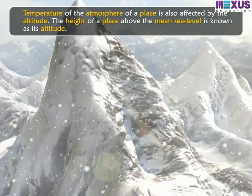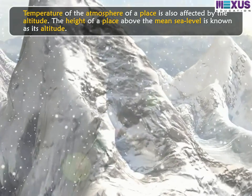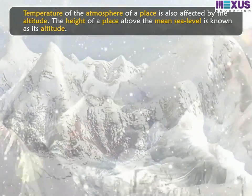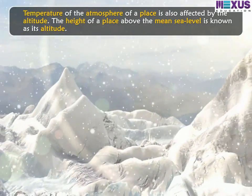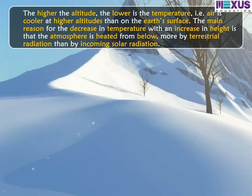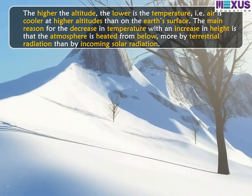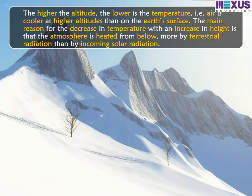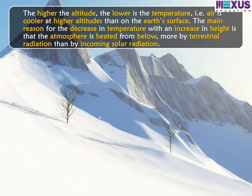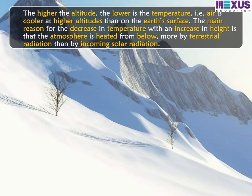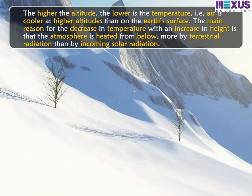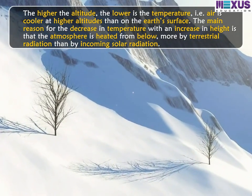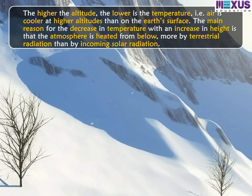The temperature of the atmosphere of a place is also affected by altitude. The height of a place above mean sea level is known as its altitude. The higher the altitude, the lower is the temperature — air is cooler at higher altitudes than on the Earth's surface. The main reason for the decrease in temperature with an increase in height is that the atmosphere is heated more from below by terrestrial radiation than by incoming solar radiation.